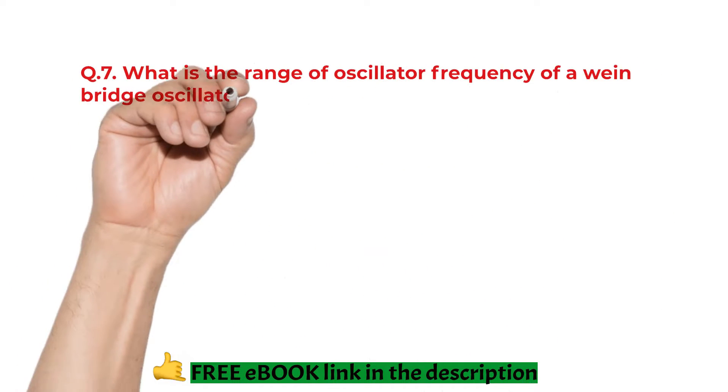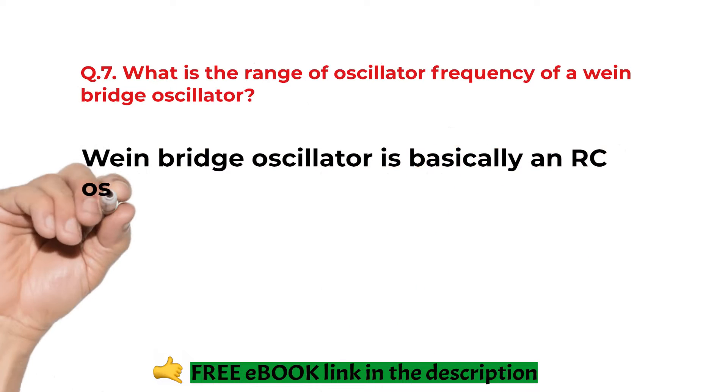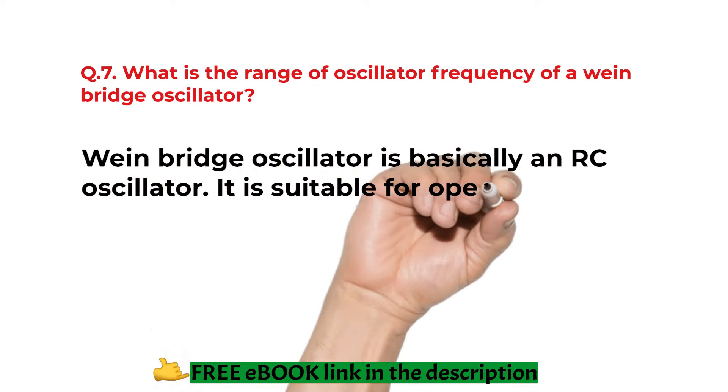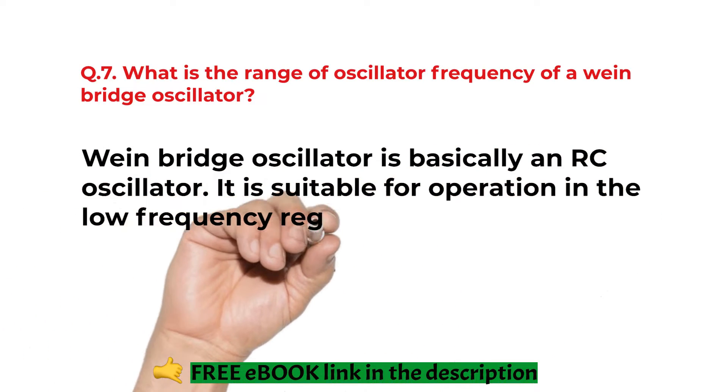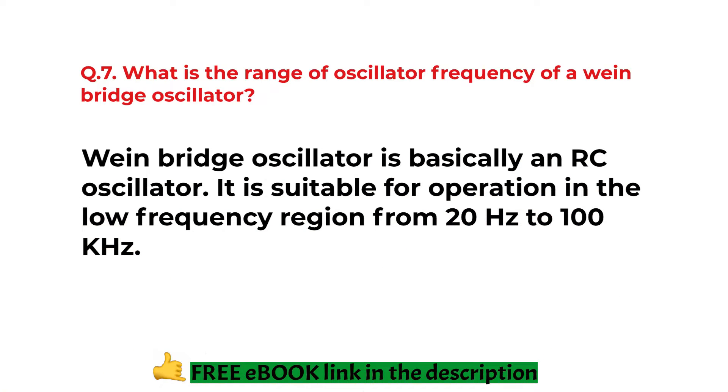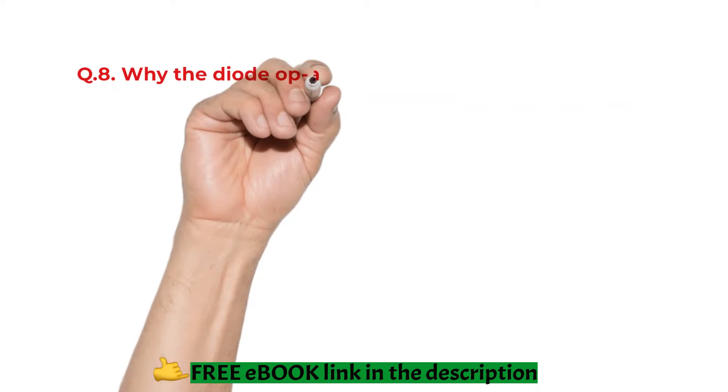What is the range of oscillator frequency of a Wien-Bridge oscillator? Wien-Bridge oscillator is basically an RC oscillator. It is suitable for operation in the low frequency region from 20 to 100 Hz.